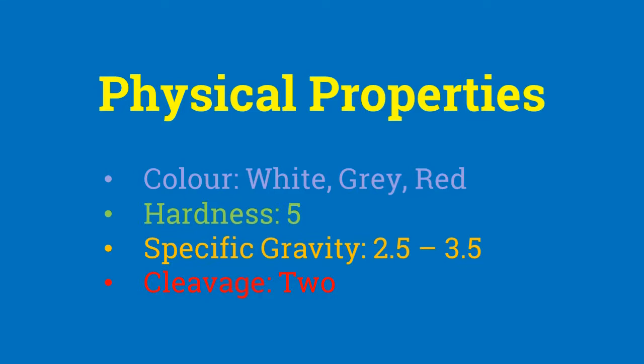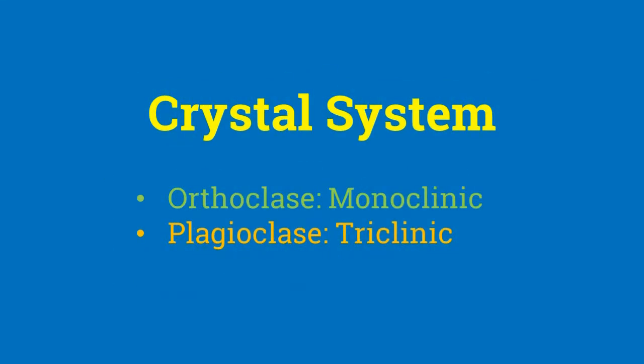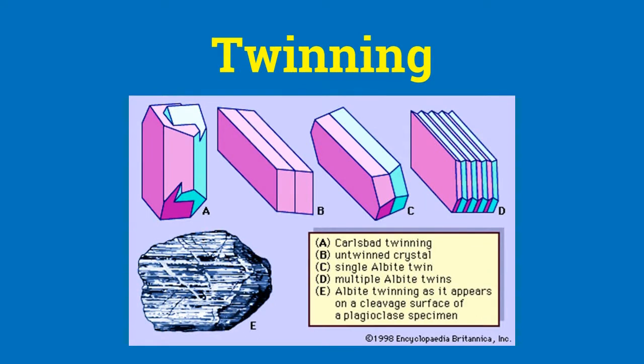Feldspar have two prismatic cleavages at right angles. Orthoclase Feldspar crystallizes in the monoclinic system whereas plagioclase Feldspar crystallizes in the triclinic system. Feldspar commonly forms simple or polysynthetic twins. Twin laws followed by Feldspar include Carlsbad, Baveno, Manebach, Albite, and Pericline.